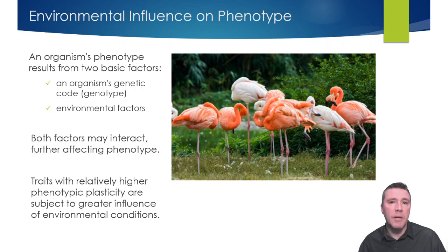Flamingos get their characteristic pink color from the food that they eat. Pigments called carotenoids give carrots their color and the reason why tomatoes are red. Those same pigments are also found in the algae that brine shrimp eat. Since those algae and the brine shrimp are a significant portion of the flamingo's diet, as the flamingo's body metabolizes those pigments, it turns the feathers pink.